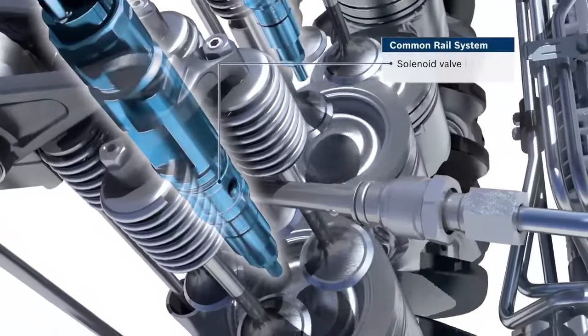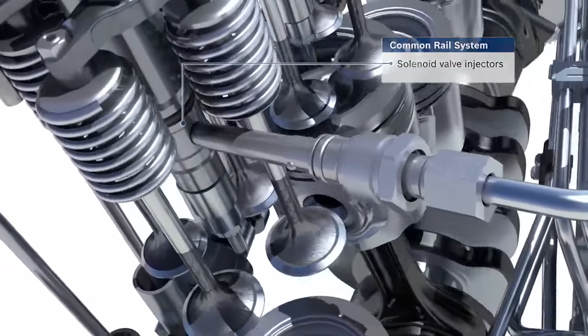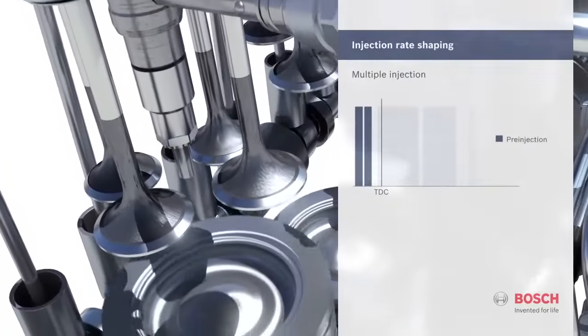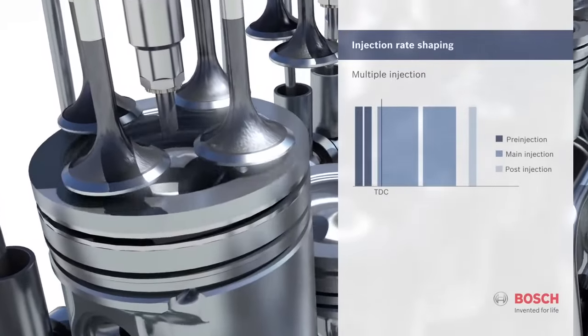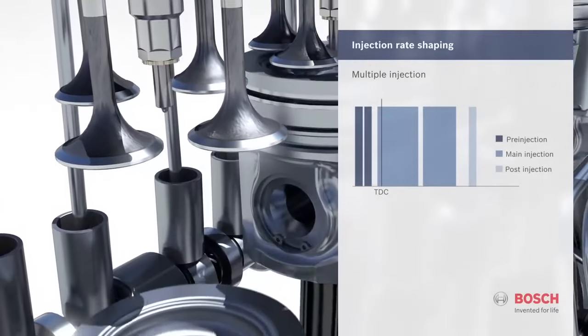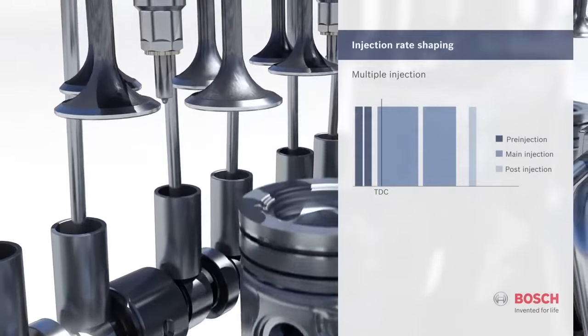Bosch solenoid valve injectors control the nozzle needle so quickly that the injection process can be divided into pre-, main, and post-injections, up to eight separate partial injections per power stroke.